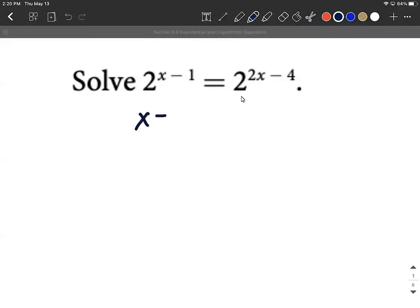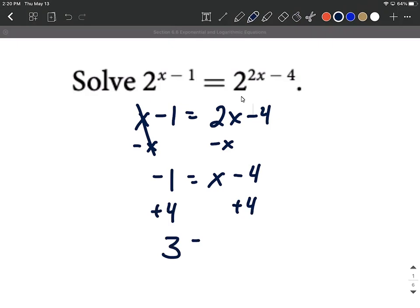So we can drop these bases and say x minus 1, that exponent, equals 2x minus 4, this other exponent. Now we're all the way down to a linear equation, so we'll just get all the variables on one side. 2x minus x makes 1x remaining minus 4. We'll go ahead and add the 4, move that to the other side, we get x equals 3 is our only solution for this equation.